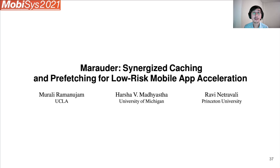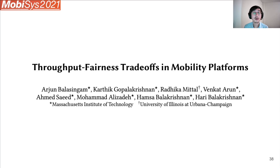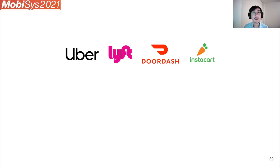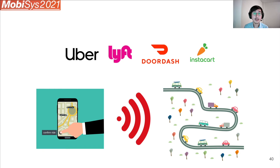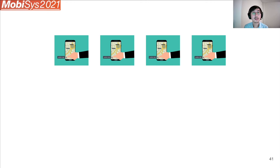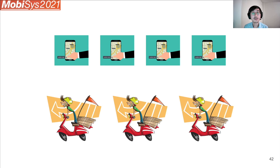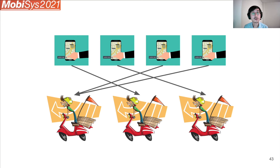The last paper of the session is Throughput Fairness Trade-offs in Mobility Platforms, and the topic is how to schedule jobs for mobility platforms, such as gig economy apps like Uber and DoorDash. Gig economy apps are a popular category — there are so many of them now: Uber, Lyft, DoorDash, Instacart, etc. In all these apps, a common thing they need to do is match a customer's request to an available gig worker on demand as requests come in. This is basically an online scheduling problem, where jobs are user requests and workers process those requests, and you need to schedule incoming jobs to available workers.